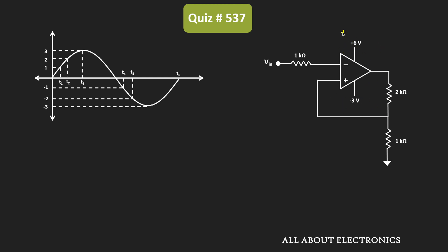The positive saturation voltage, +Vsat, is +6V, while the negative saturation voltage, -Vsat, is -3V. This sine wave is applied as the input to the given Schmitt trigger.